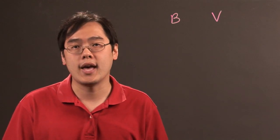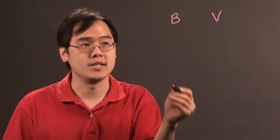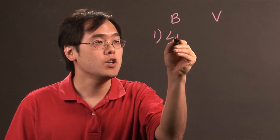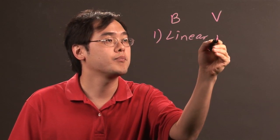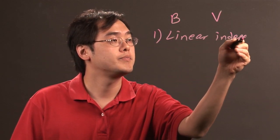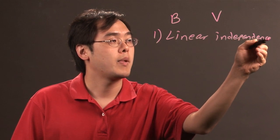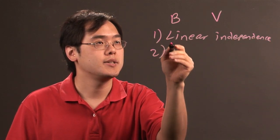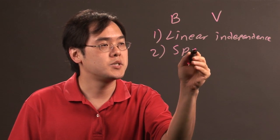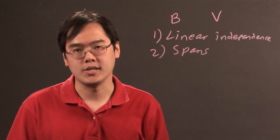There are two conditions to show that a set is a basis. One, you have to show linear independence. And two, you have to show that the set B spans the vector space.